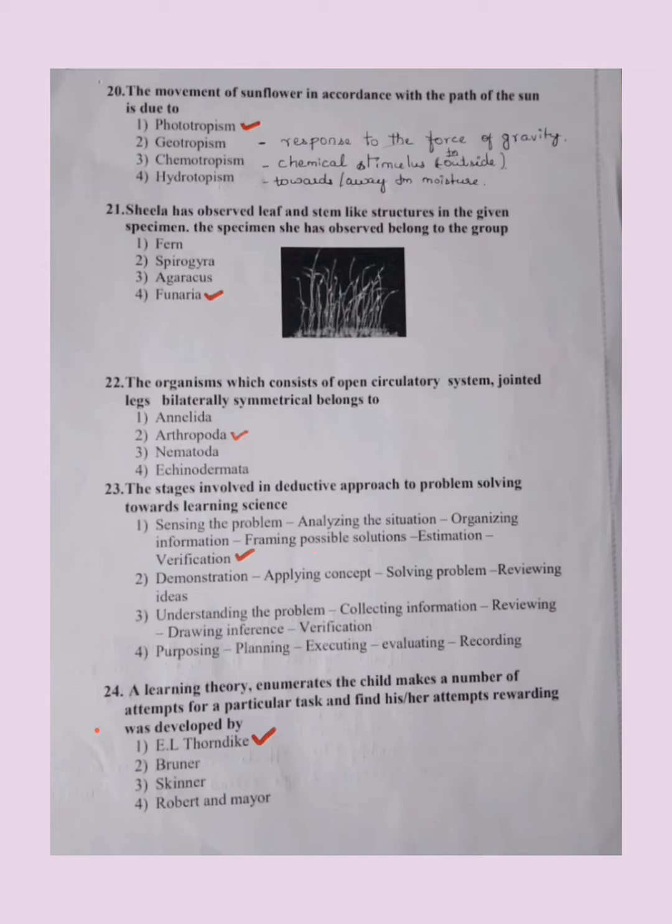24th one: a learning theory enumerates the child makes a number of attempts for a particular task and finds his or her attempts rewarding was developed by. Thorndike focused on this theory and he gave the explanation for this theory. When a task is given for a particular person, they perform based on the rewards. They make enumerate number of attempts, and if it is rewarded, they analyze, okay yes it is rewarded, so I have to do these things like that. With cat he performed this experiment. In order to understand this, Bruner, Skinner, and all, refer psychology topics. It's nice and you can list out the important points and theories.